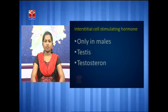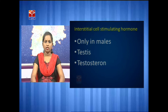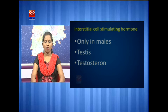The last hormone of the anterior lobe is interstitial cell stimulating hormone. The function of this hormone is seen in the case of males only. This hormone stimulates the interstitial cells of the testes to produce the hormone testosterone.